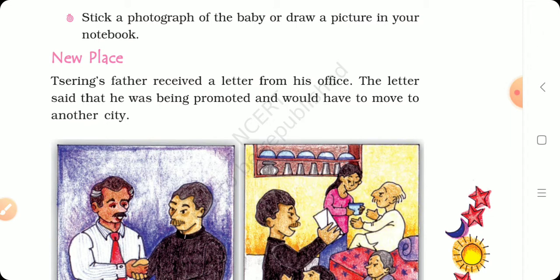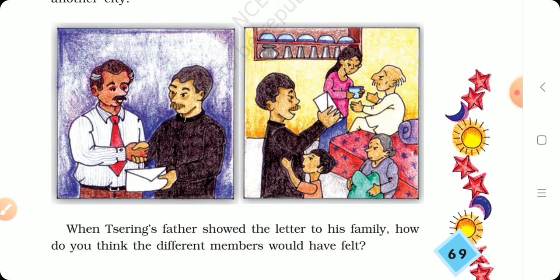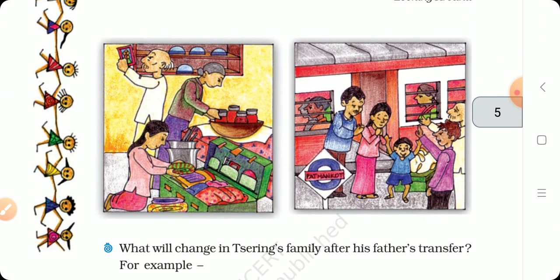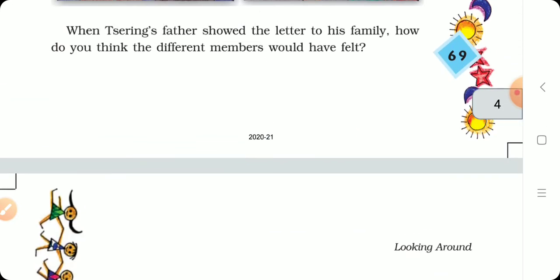He gets a promotion and would have to move and get a shift to another city. When Tree String's father showed the letter to his family, how do you think the different members would have felt? Who can say? He has shared a promotion news with his family members. So look at the picture — you can see who is in the family.